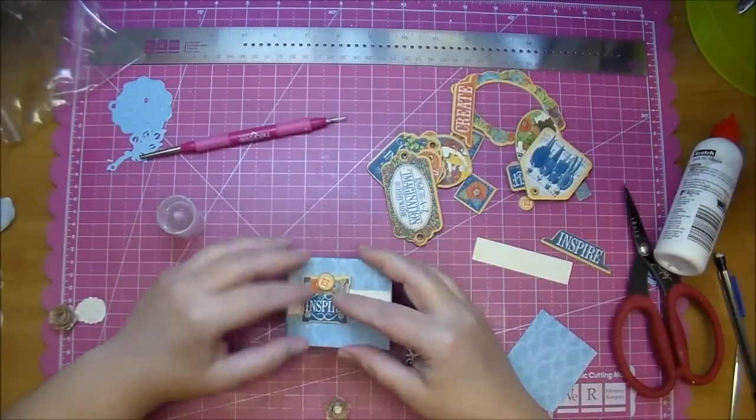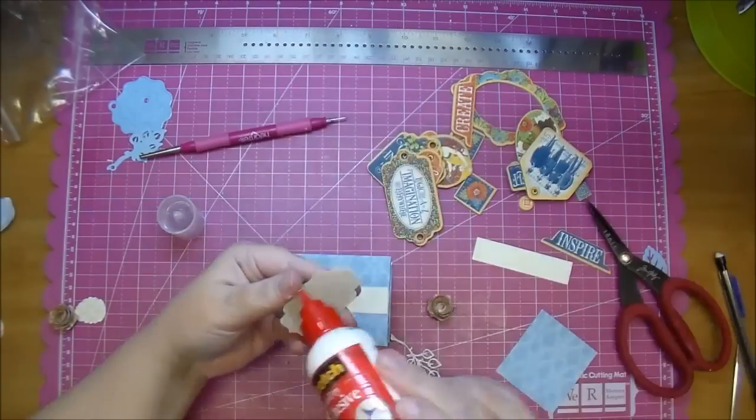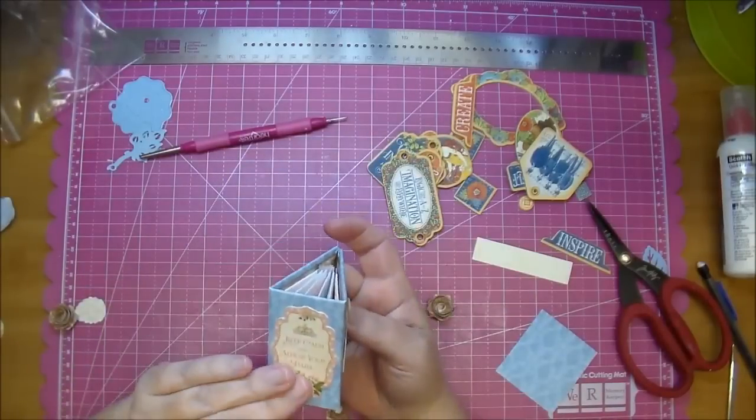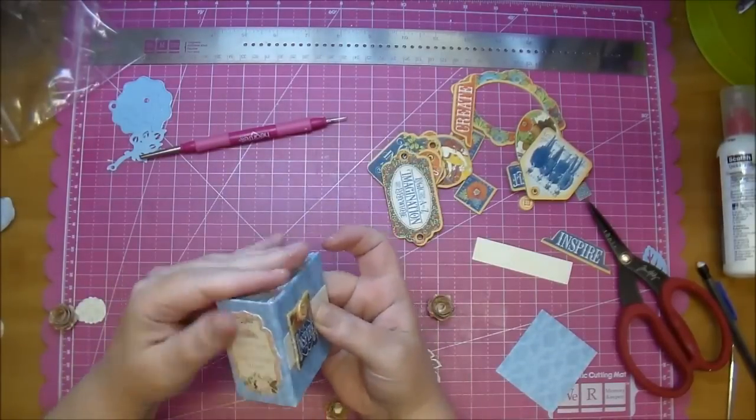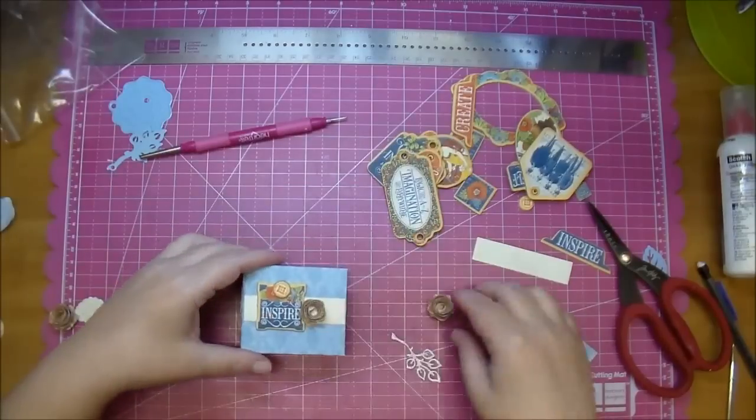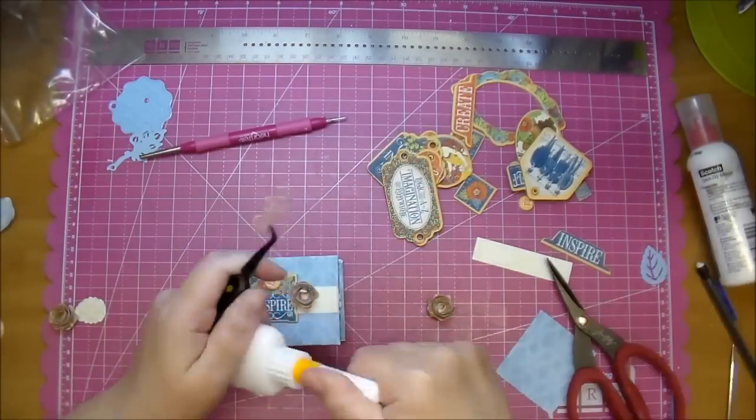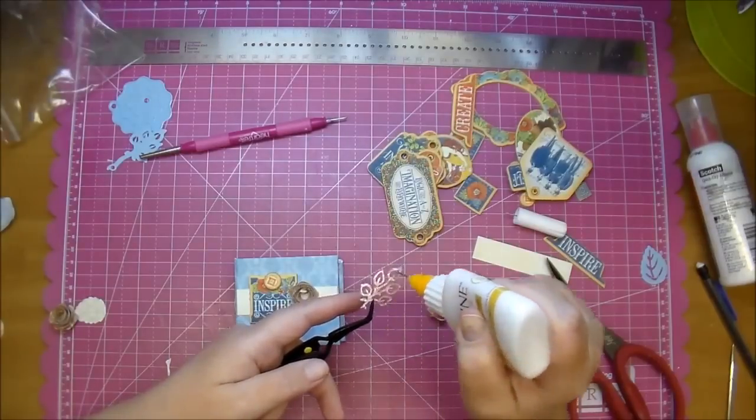And I will add that to the front with some Scotch Quick Dry. This is from the Gilded Lily Tags and Pockets collection and I added that to the spine. It's perfect for the spine. That in that little bottle is also Scotch Quick Dry. It's just a fine tip applicator.